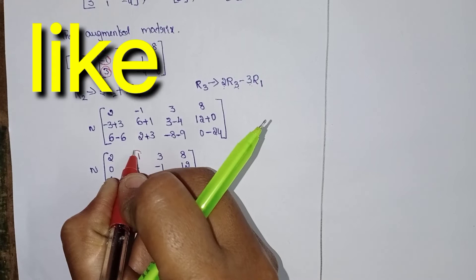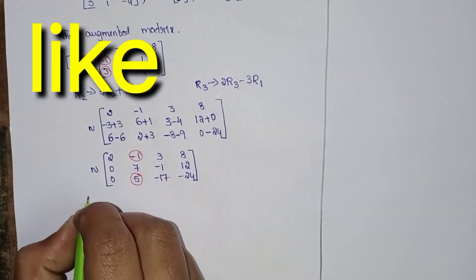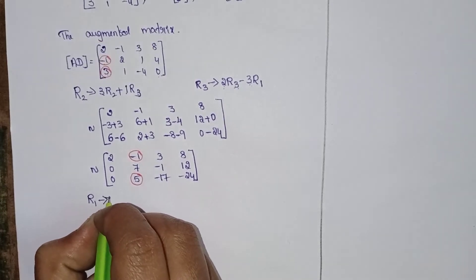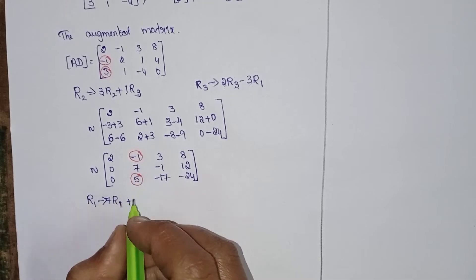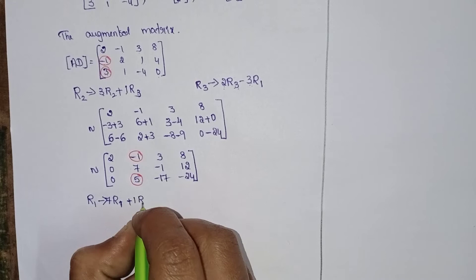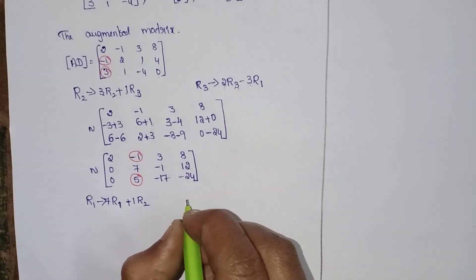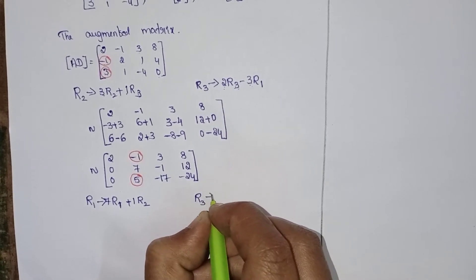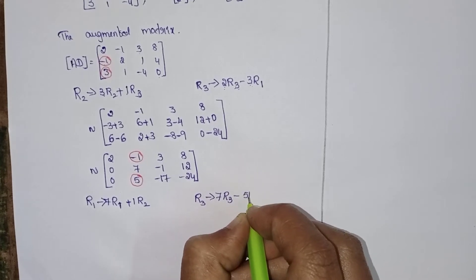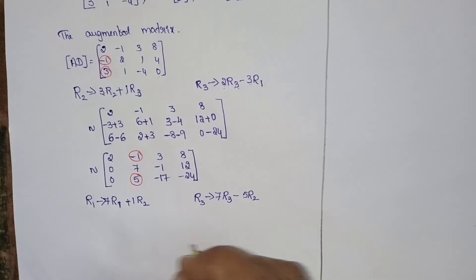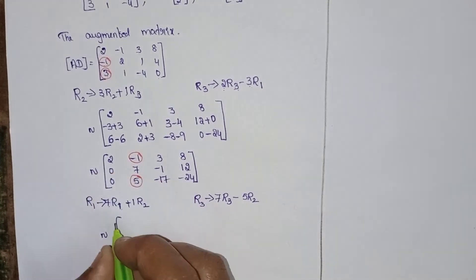Now convert these two entries into zeros. The operations are: in R1, apply 7 times R1 plus 1 time R2. In R3, apply 7 times R3 minus 5 times R2. For R1: 7 times R2 — 7 twos are 14.